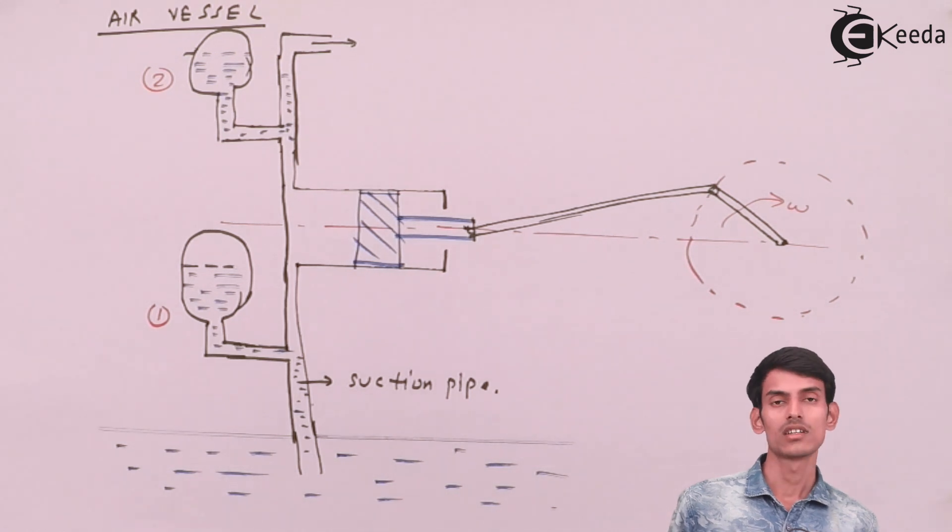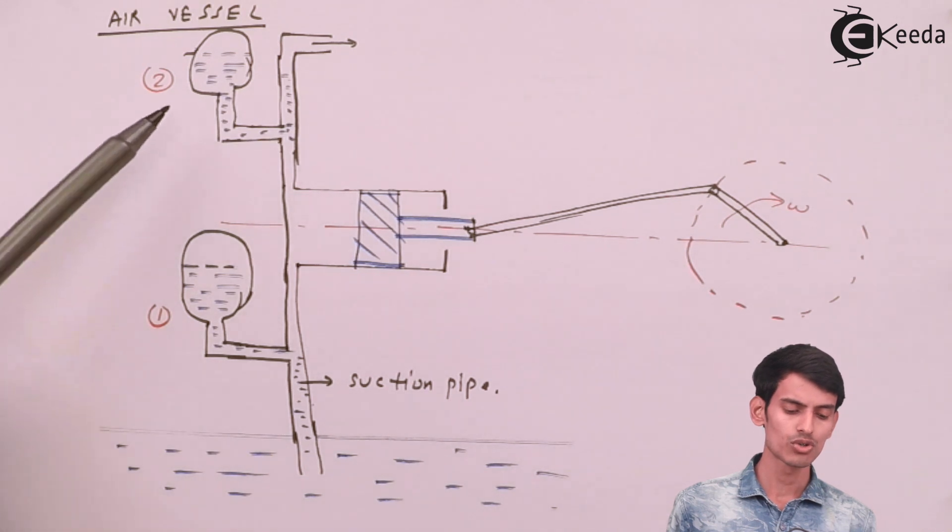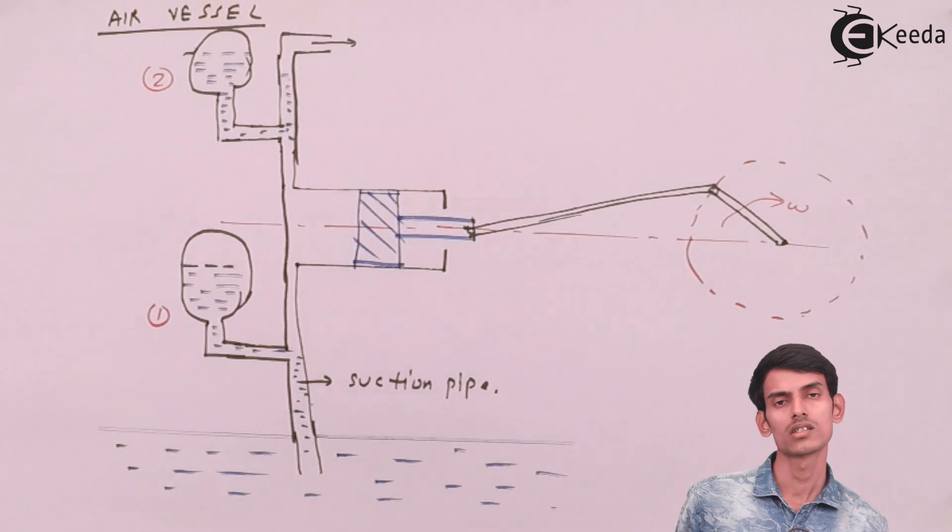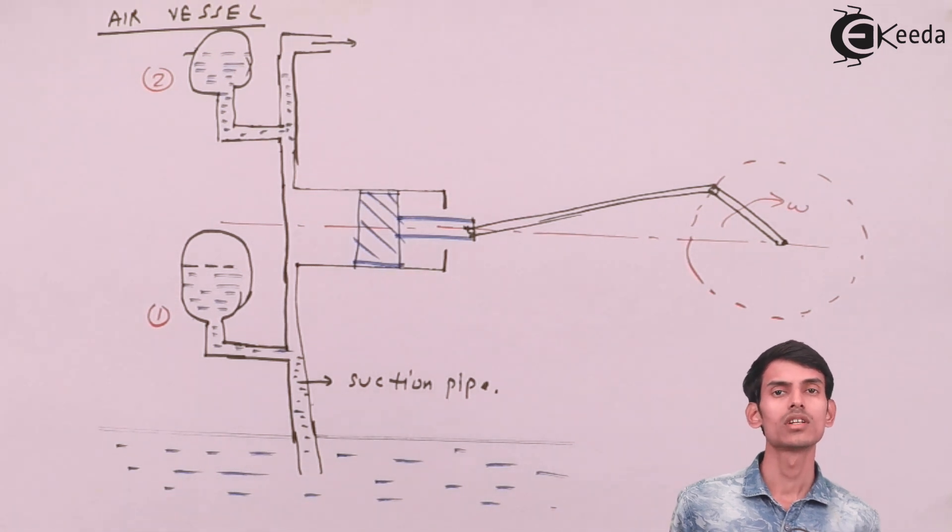Similar is the case at the delivery side. The water that is being discharged from the pump first goes into the air vessel, fills the air vessel, compresses the air inside the air vessel, and then it starts discharging from the delivery pipe.